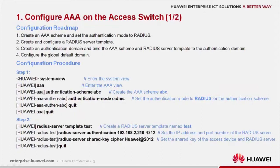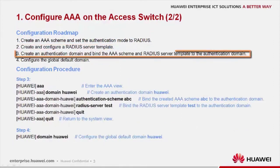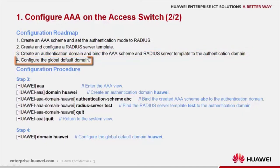Perform four steps to configure AAA. Step one, create a AAA scheme and configure the authentication mode. Step two, create and configure a RADIUS server template. Step three, create an authentication domain and bind the AAA scheme and RADIUS server template to the authentication domain. Step four, configure the global default domain.